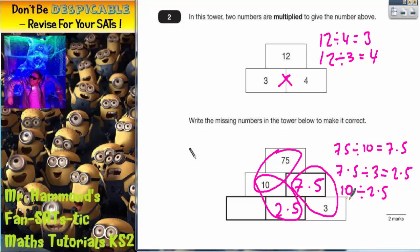How many 2.5s go into 10? The answer is 4. So this answer here must be 4.